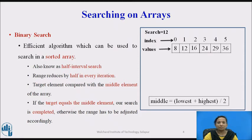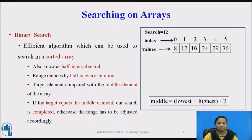Here is the example. The sorted numbers stored in the array are 8, 12, 16, 24, 29, 36, stored in ascending order. The size of the array is 6. This list is divided at the middle using the formula: lowest index plus highest index divided by 2. For this example, 0 plus 5 divided by 2 results in 2. So the middle element is at index 2. The search element 12 is compared with the middle element 16, which is not equal to 12.